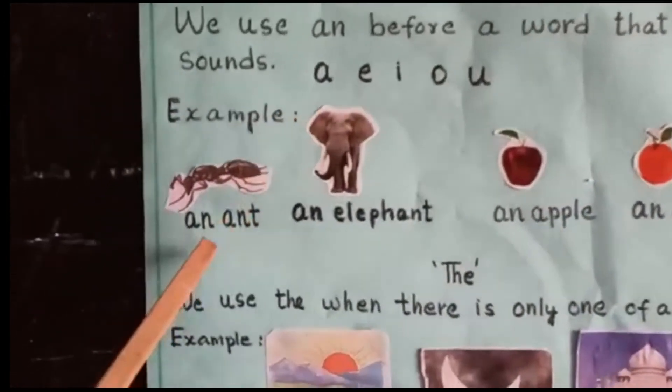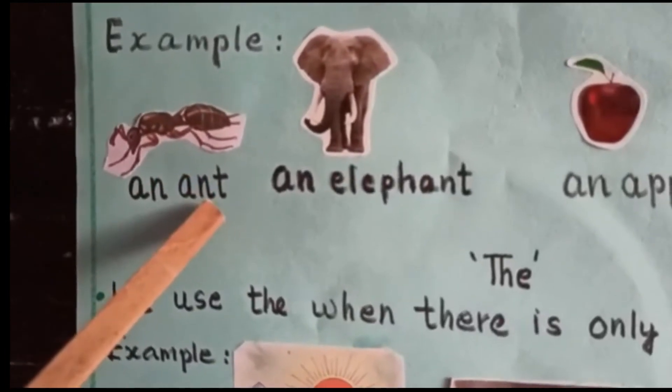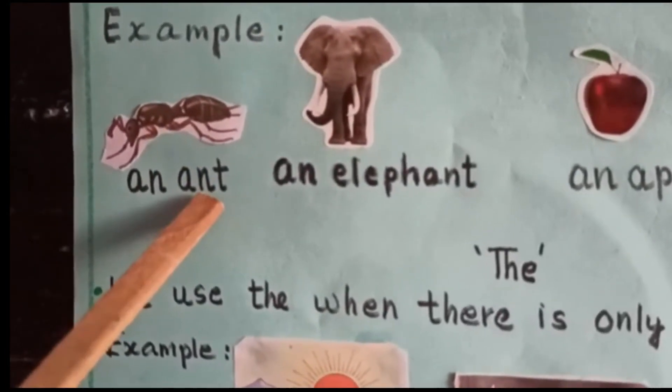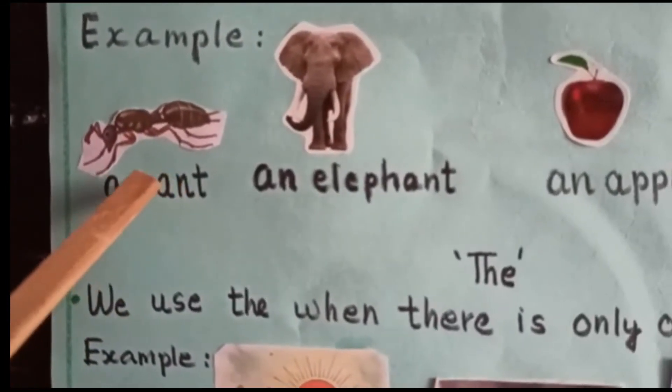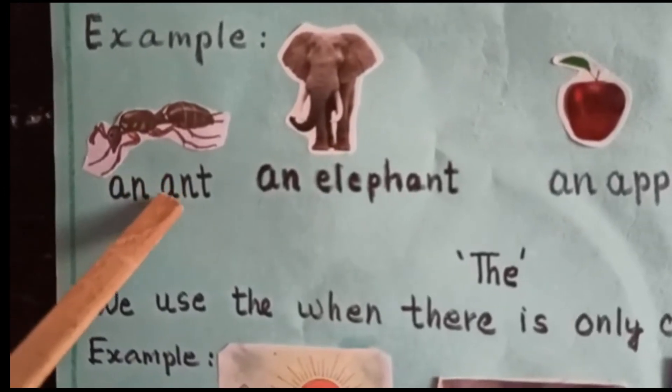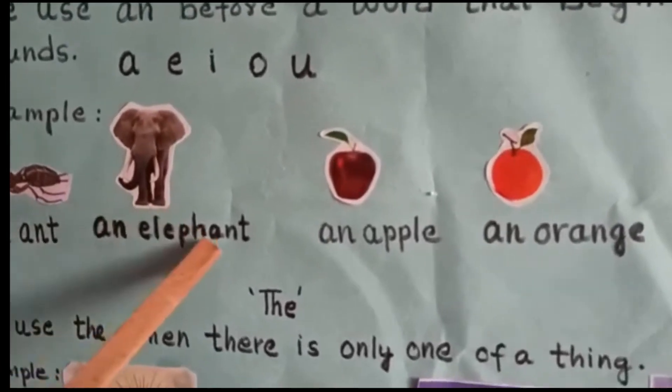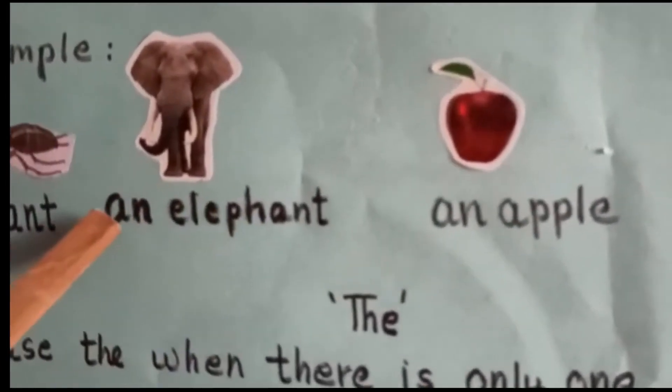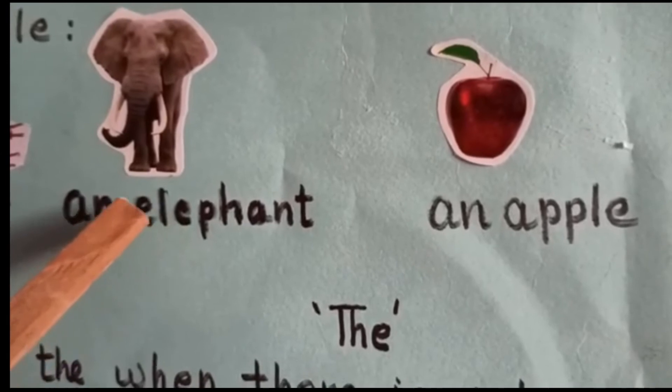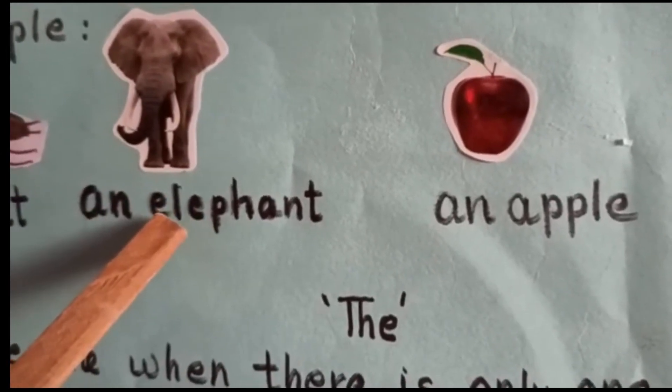Example, an ant. We use an because first letter A is a vowel. Second one, an elephant. Here also we use an because first letter E is a vowel.